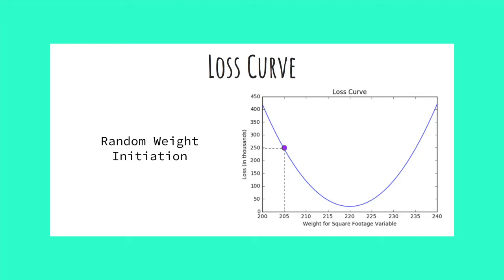Note, my y-axis is in thousands. With a weight of 210, our model will have a loss of about 125,000. So hopefully you get the idea. This curve is built out of finding the model's loss at any potential value for our weight.